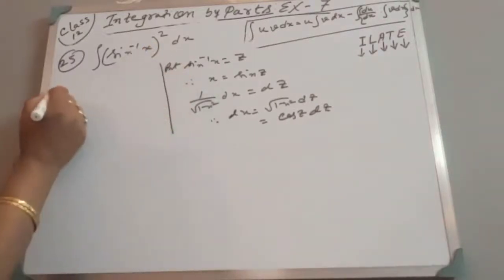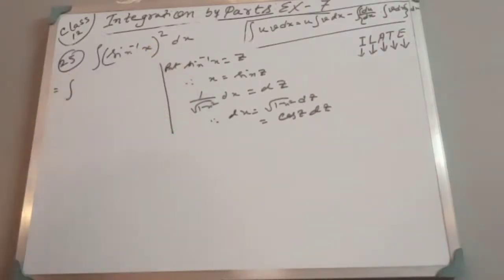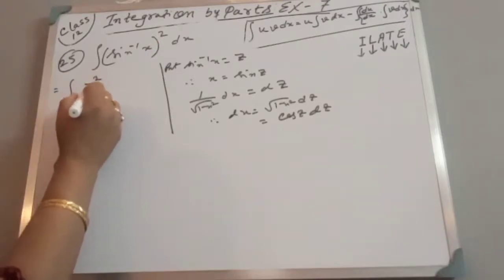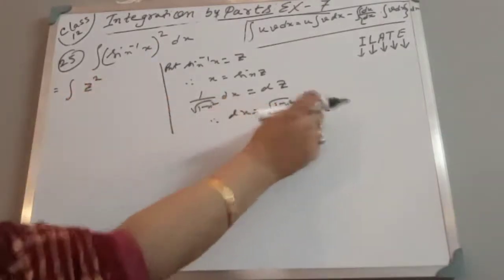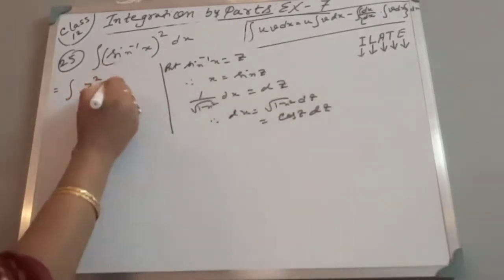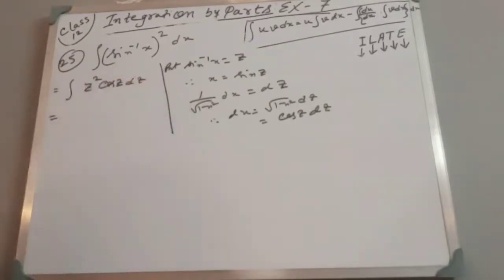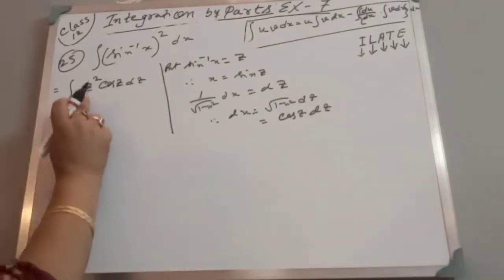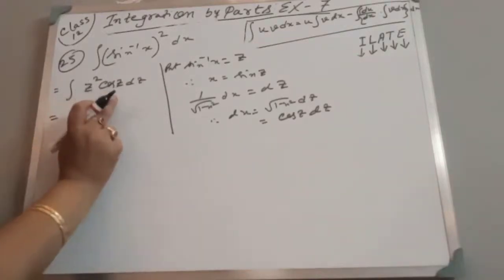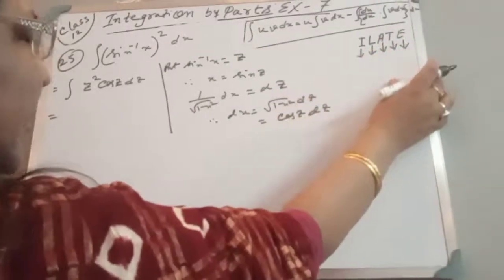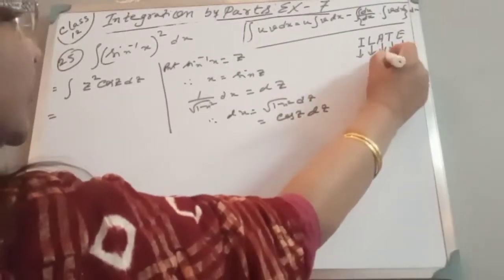Therefore the integral becomes: (sin⁻¹x)² = z², and dx = cos z · dz, so we have ∫z² cos z · dz. Now we apply the UV rule — the IBP rule. This is an algebraic function and a trigonometric function.